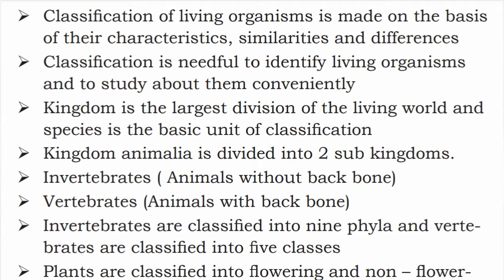Plants are classified into flowering and non-flowering plants, and further classified into groups based on the nature of the plant body and fruiting body. So that is plant classification — flowering plants and non-flowering plants are two types, further classified by plant body nature and fruiting body.